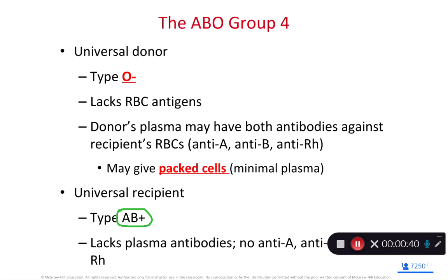The issue with O negative blood type is that a patient with O negative blood will have antibodies for the A antigen, B antigen, and potentially the rhesus factor antigen. Because this donor is naturally producing antibodies, we don't want to introduce those into the recipient's bloodstream. So the medical community spins down the blood to donate mostly red blood cells and minimize the antibodies transferred.